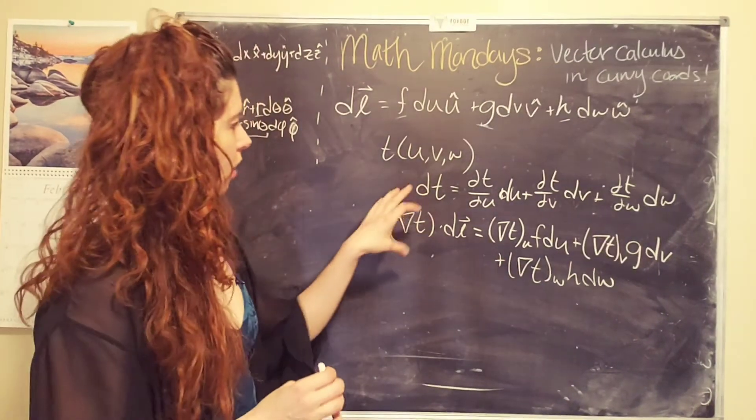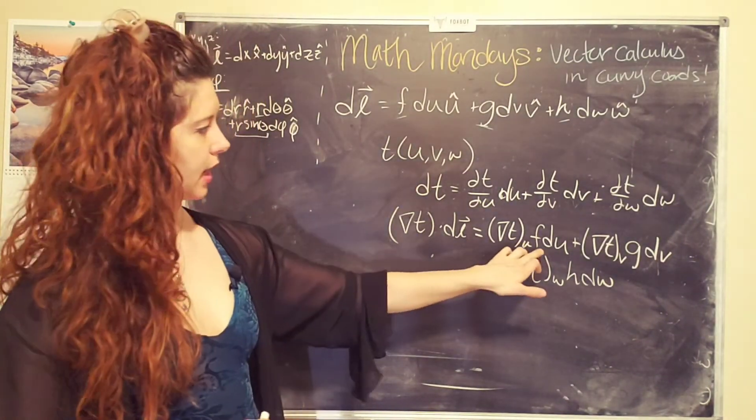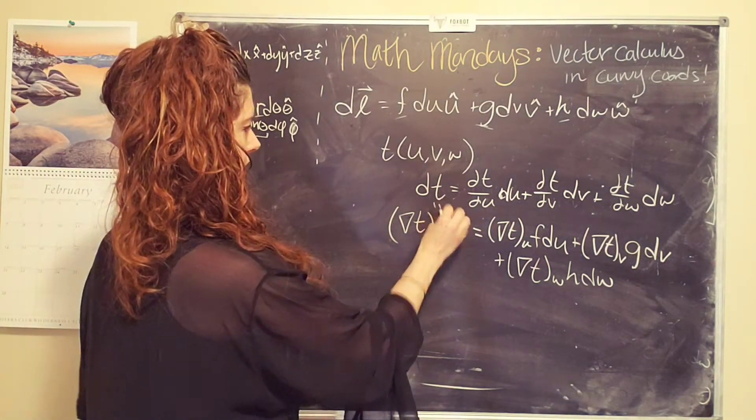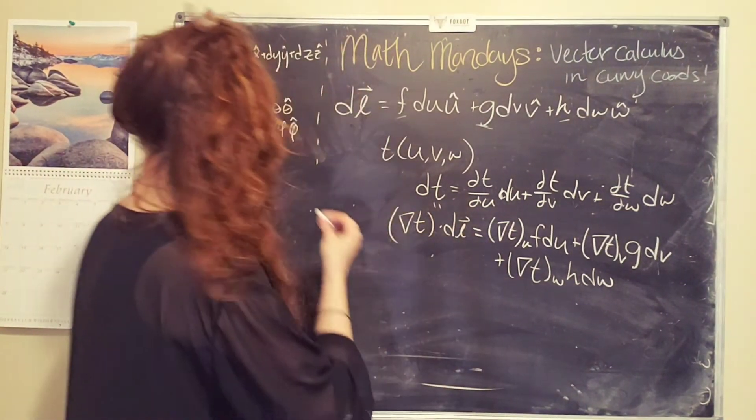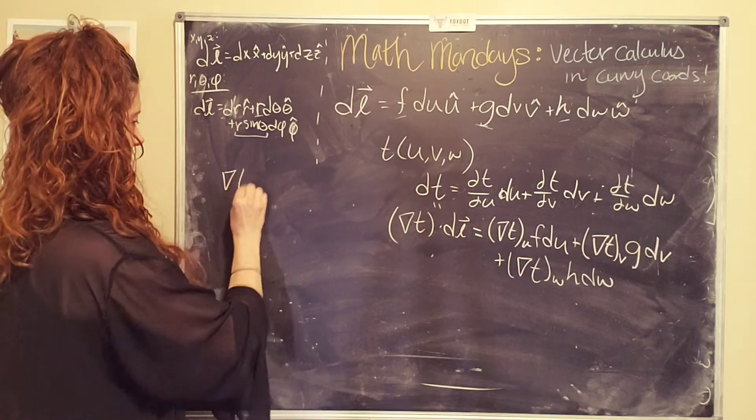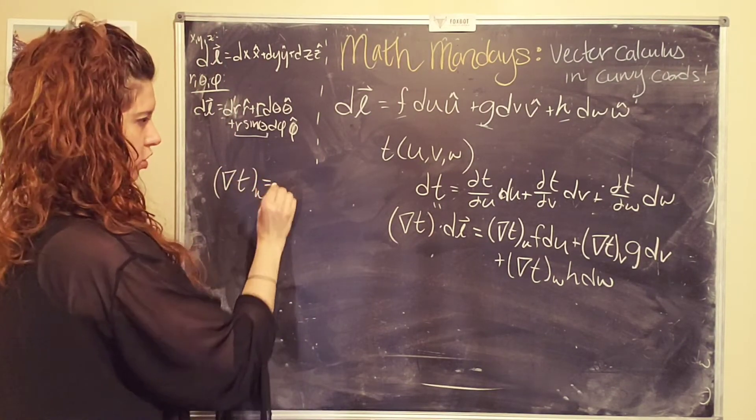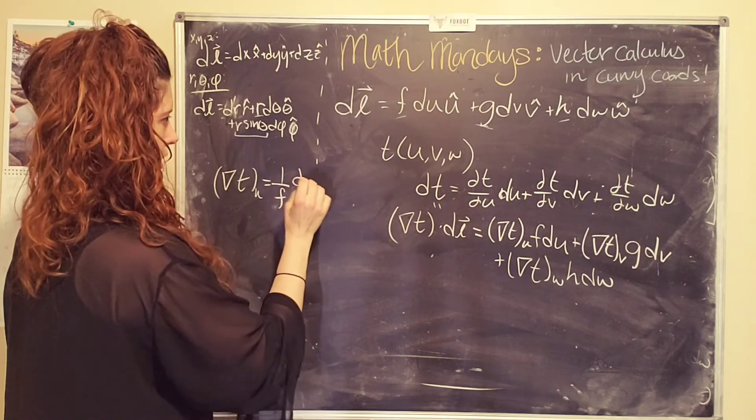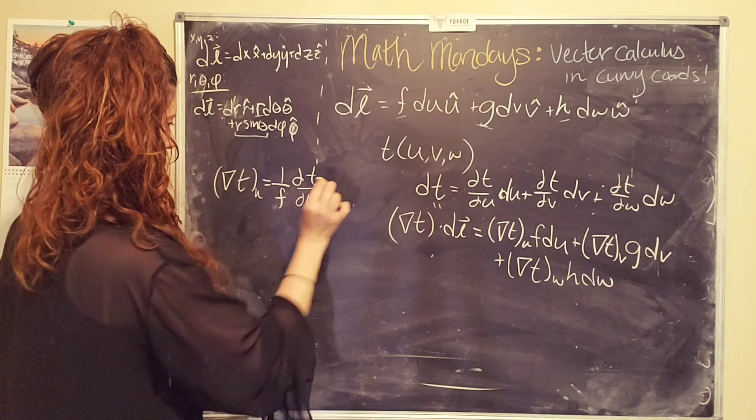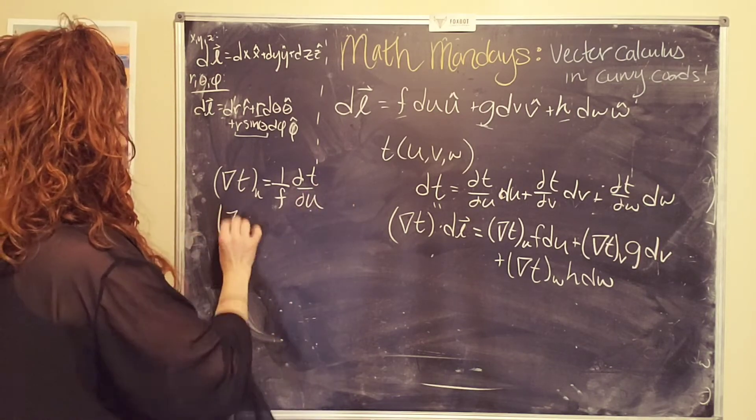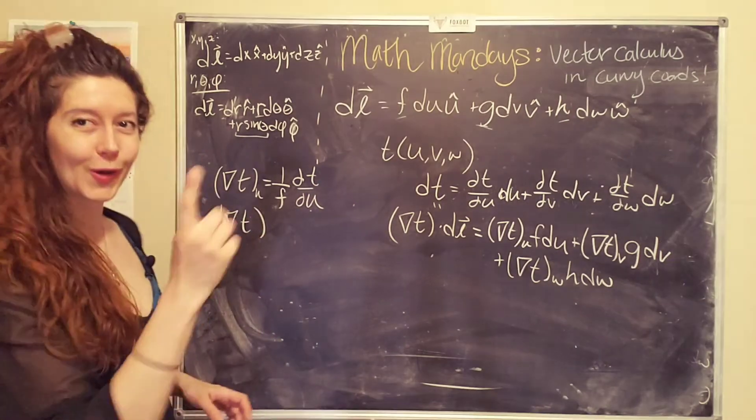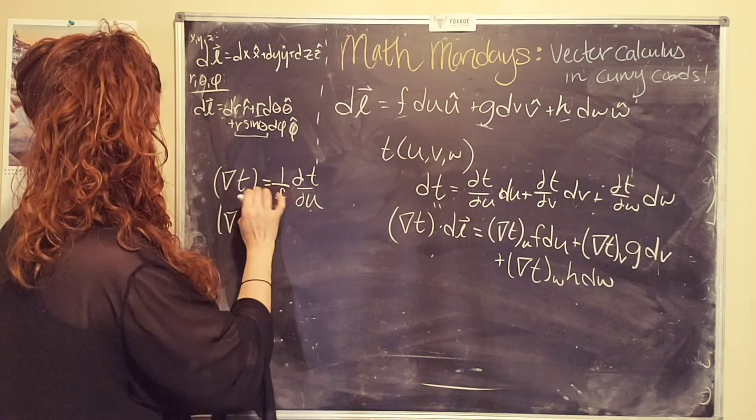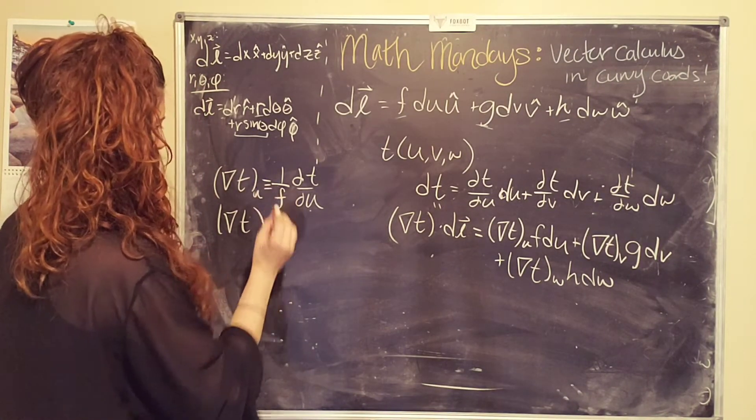And so now we can compare the two and say, okay, wait a second, these will be equivalent, this will equal this, when I define del t in the u direction to equal 1 over f times the partial of dt du. And similarly, it will be equivalent, I need to do it for the other two directions as well.